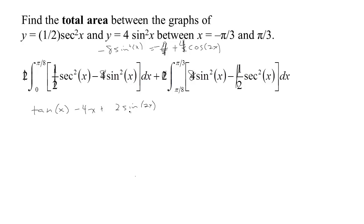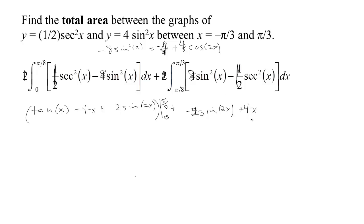Let's verify: the derivative of 2sin(2x) is 2·cos(2x)·2 = 4cos(2x). Good. So for the first integral, the antiderivative is tan(x) − 4x + 2sin(2x), evaluated from 0 to π/8. For the second integral, the antiderivative is −2sin(2x) + 4x − tan(x), evaluated from π/8 to π/3.